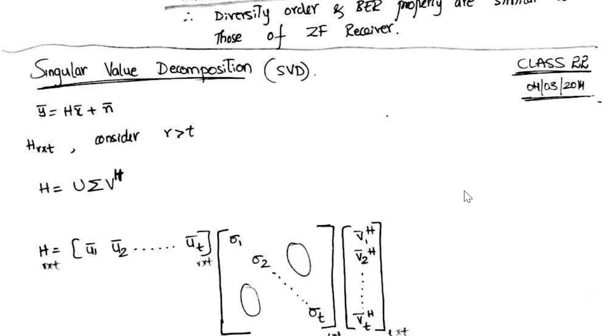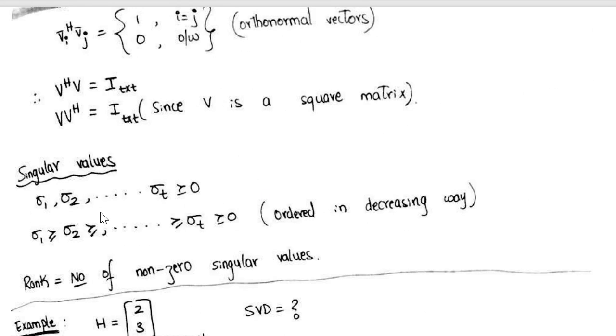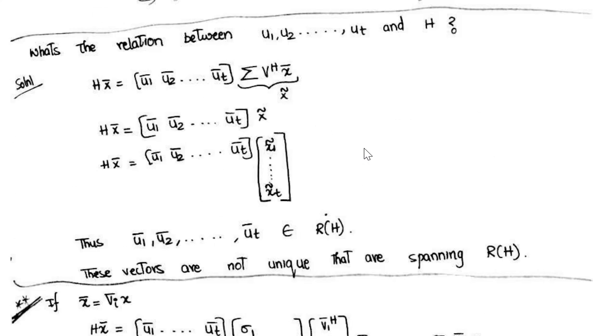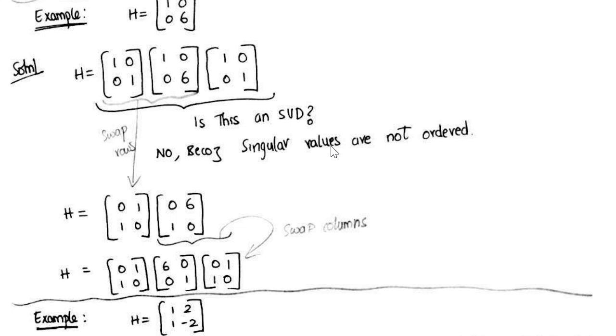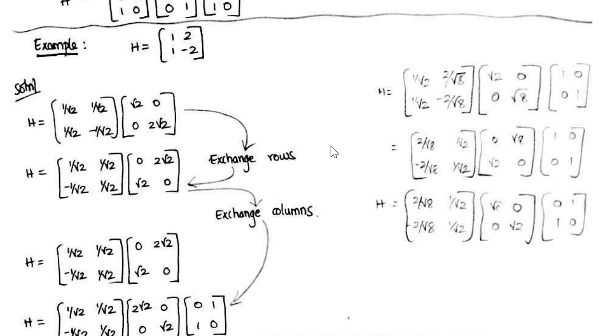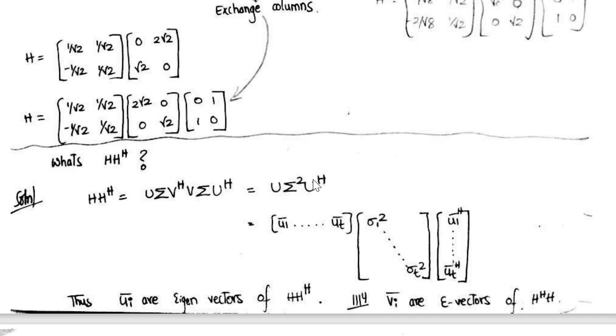So next is SVD. When number of receive and transmit antenna... important properties of singular values, examples of how to perform SVD is here. This is a very much important property, so you can note down that H H-hermitian, if you perform, then you will get U sigma square U-hermitian. U will form the eigenvectors of H H-hermitian.